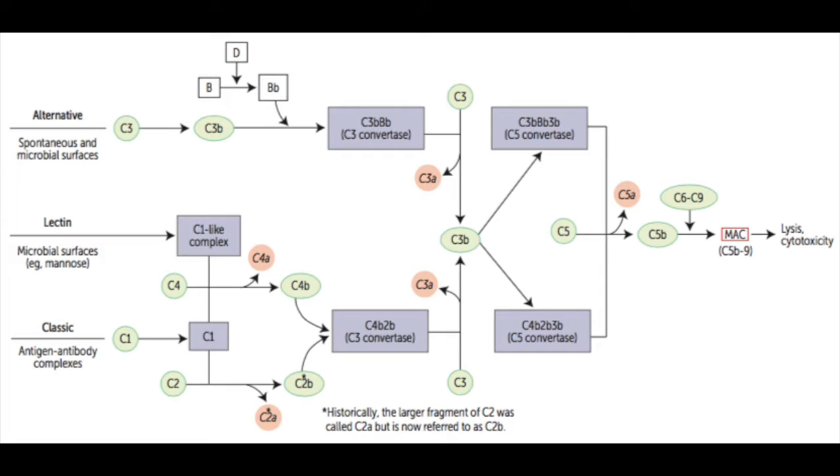Just like the other convertase, the job of this C5 convertase is to cleave C5. C5 will then separate into 5a and 5b. 5a floats away, 5b embeds itself into the surface of the bacterial membrane. Now 5b has the job of recruiting C6 and C7 and C8. We get a complex now starting to form with 5b, 6, 7 and 8. Once we have those three, then they recruit a bunch of C9. C9 is the last protein, and we get several C9s that come together and form a ring which will then insert itself puncturing the membrane of the bacteria.